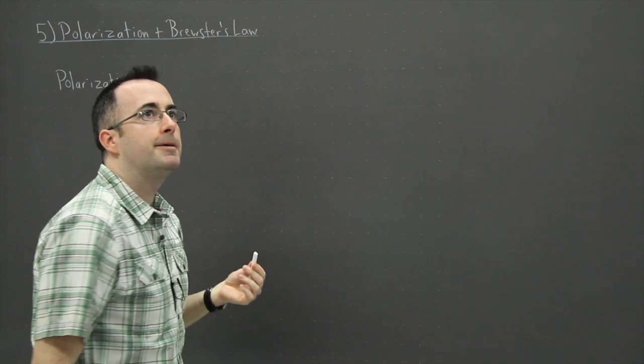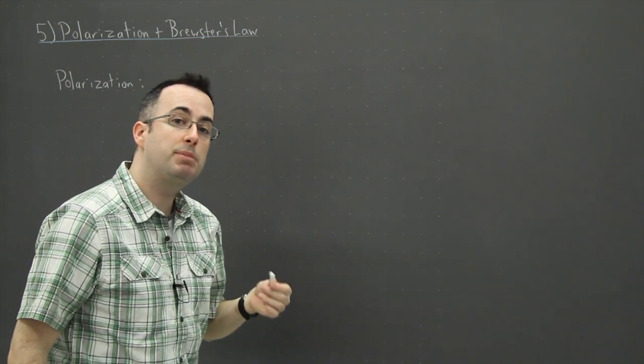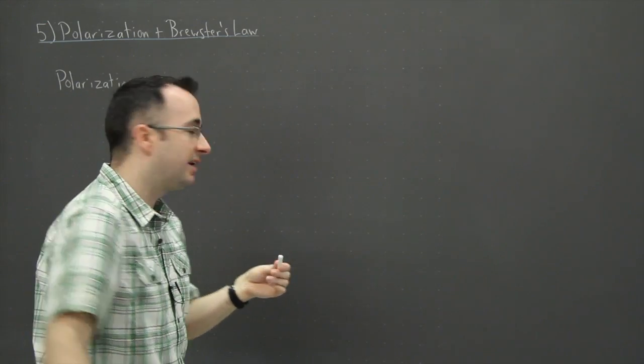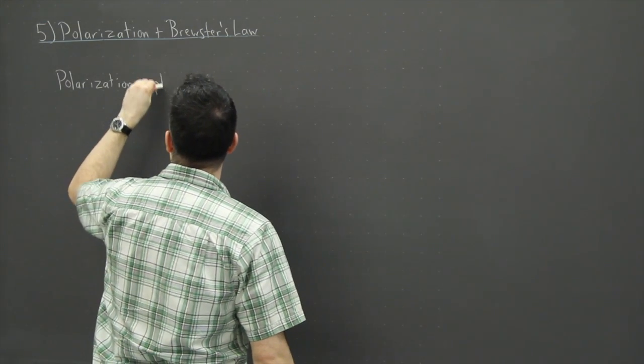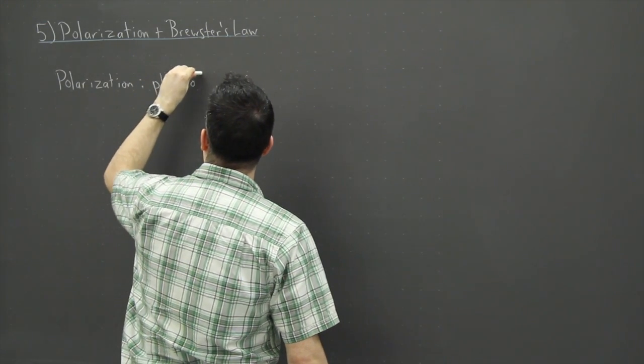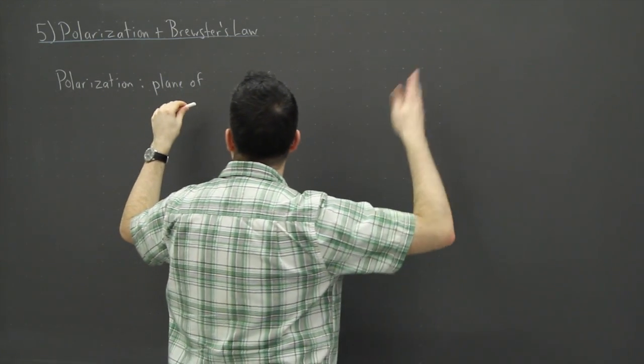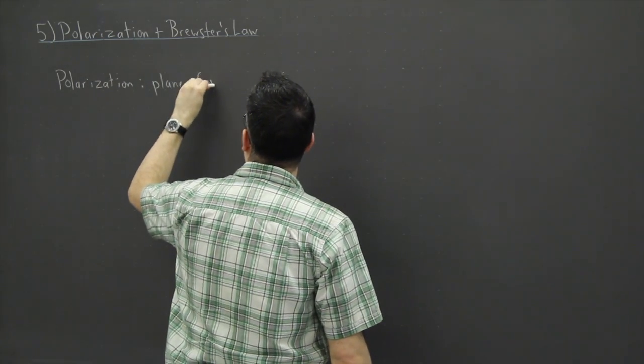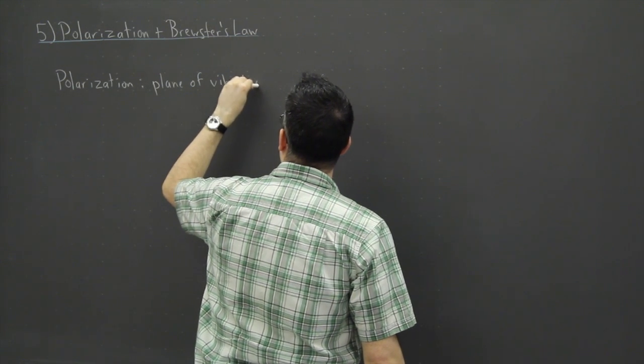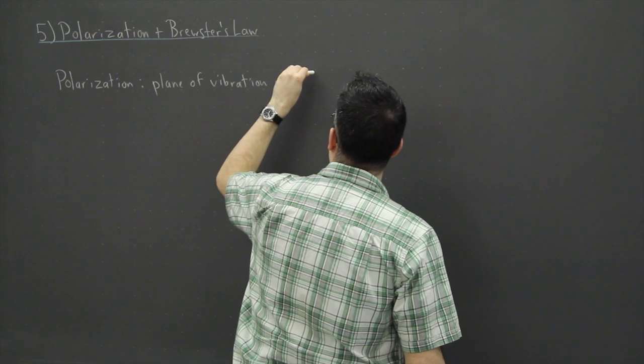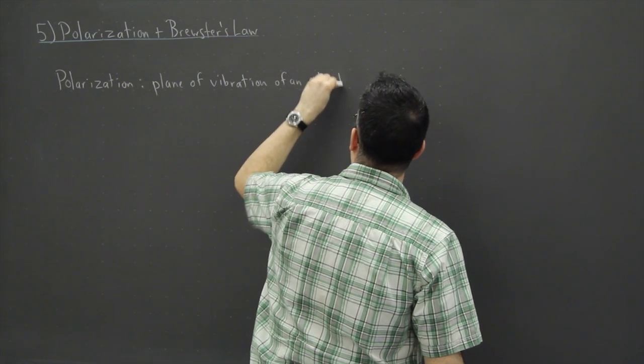This is the plane of vibration of an electromagnetic wave, in other words light. So it's a plane of vibration, I don't mean an airplane, I mean an XY or YZ or something like that. It's a plane of vibration of an electromagnetic wave.